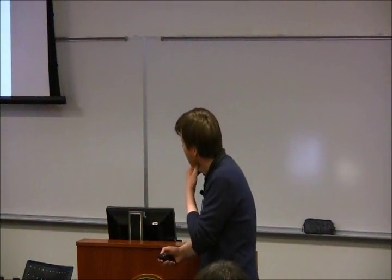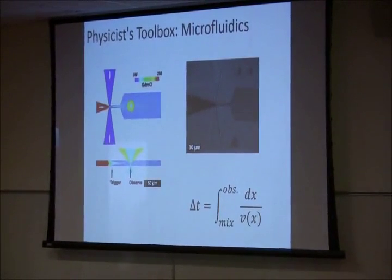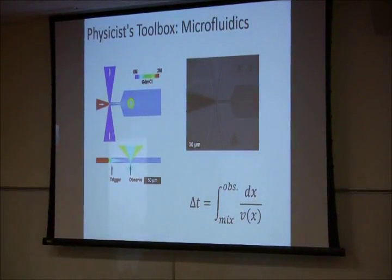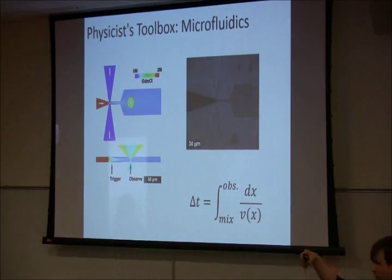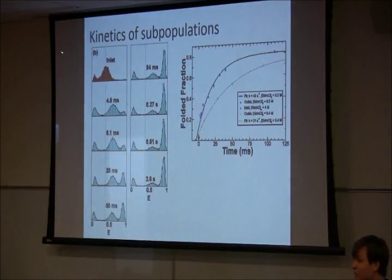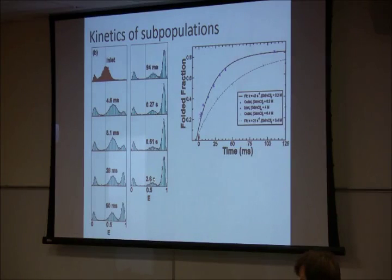Here's a micrograph with a 30-micrometer scale bar — everything here is smaller than the thickness of a human hair. We flow in the sample with a chemical that makes it unfold — a denaturant — and then dilute that out. The fountain pen ink shown on the right is a great way to visualize what's going on. We have mixing here, and then later in the channel we look. Because we're using very small channels and very low flow rates, the flow is very predictable — laminar flow. We trigger the reaction by mixing and then observe at different places downstream, corresponding to different times.